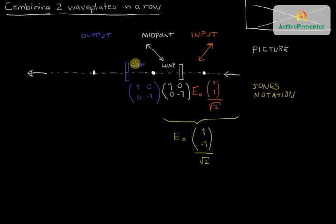When we then pass through the second half wave plate, we operate 1, 0, 0, minus 1, again, on this state. That's going to give us an amplitude of E naught and a state of 1, and then minus 1 times minus 1, which is positive 1, over root 2. So again, no amplitude lost. And the output state is a 1, 1 state. That's a positive 45 degree orientation. So we're back to having a state that goes like this.